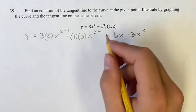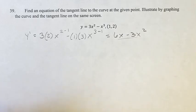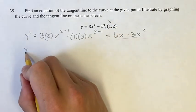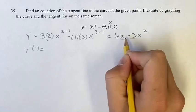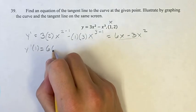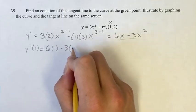Now, we want to find it at this point, this is just the general derivative, we want to find it when x is equal to 1. So y prime of 1 is equal to, now plug in 1 wherever you see x: 6 times 1 minus 3 times 1 squared.